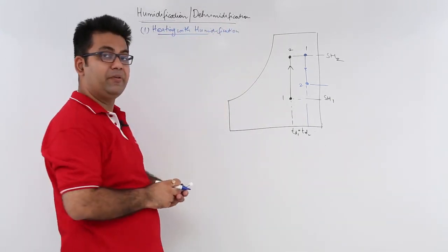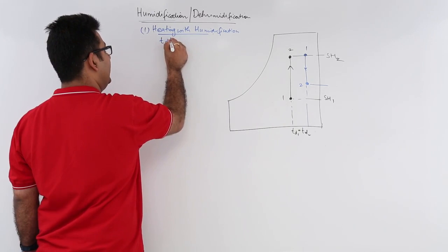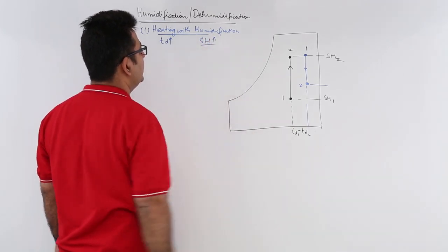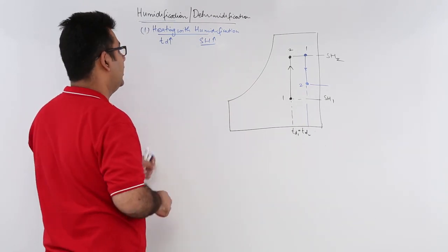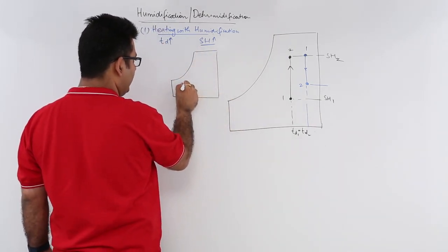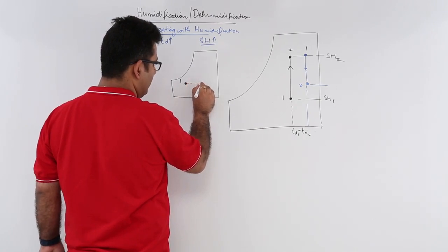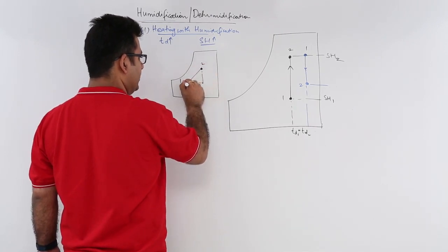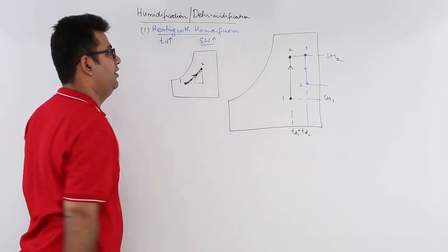Let me draw this chart space. Now we have to heat it and also humidify it. Heating means the dry bulb temperature has to go up, and humidification means the specific humidity has to go up. So you are at a starting point, you first increase your DBT to an intermediate state, and then you humidify it to reach the final point. This line indicates that you have heated it and also humidified it.